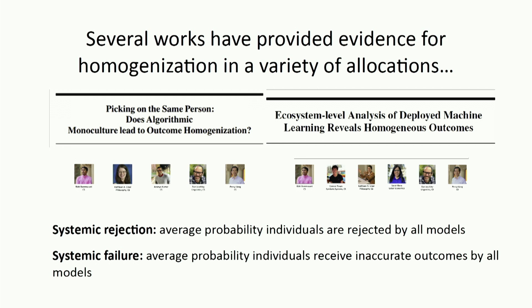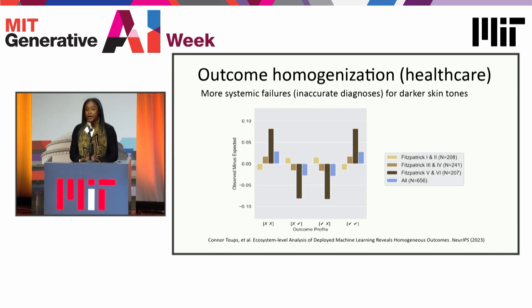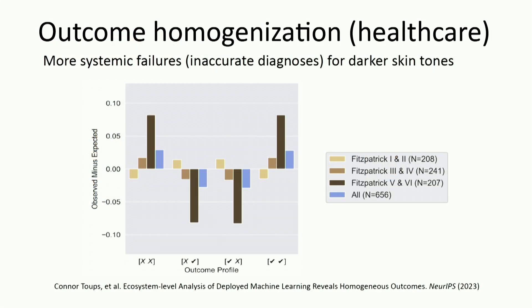There have been a couple of recent works I want to highlight that have talked about how this comes to be in both foundation models and models deployed on wide swaths of the population. They measure two things: first, systemic rejection — the average probability individuals are rejected by all models — and systemic failure — how likely you are to receive an accurate prediction across all models. One highlighted experiment involves a prediction algorithm used in healthcare across a wide variety of individuals, which shows systemic failures for darker skin tones. For those with darker complexions, these models tend to be inaccurate across many healthcare systems, showing a systemic bias or inaccuracy that comes from sharing components across hospitals.